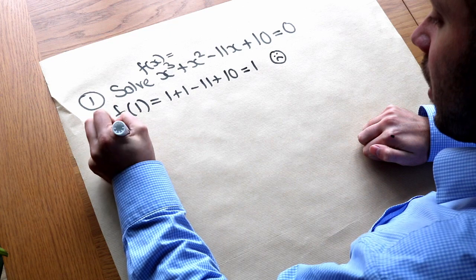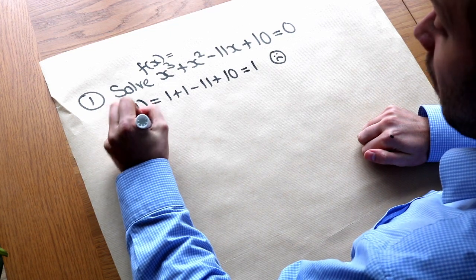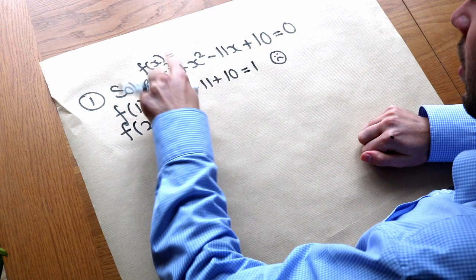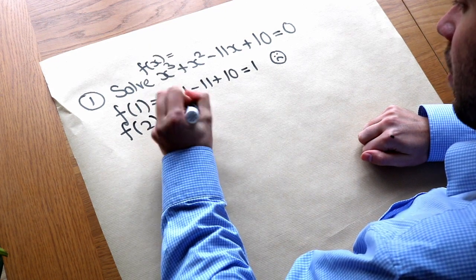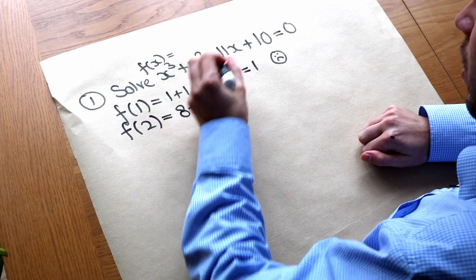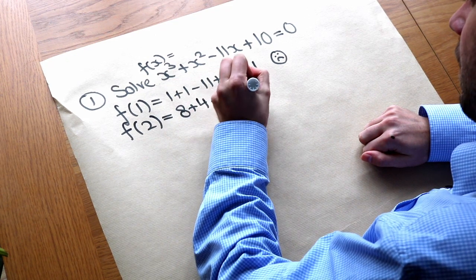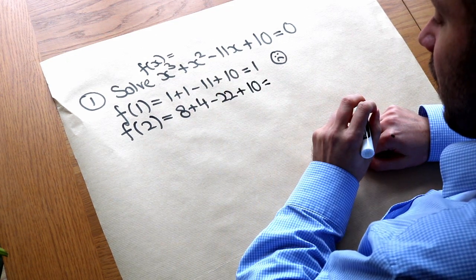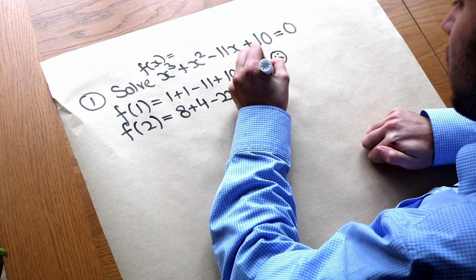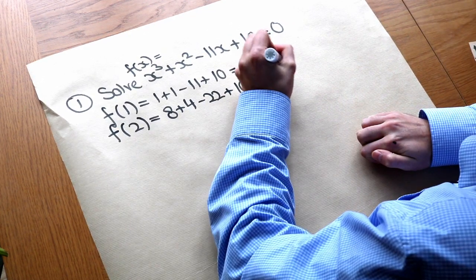What about let's try f of two. We might have tried f of minus one next, but let's just try two. We've got eight plus two squared which is four minus eleven times two which is minus twenty-two plus ten. And then if we do that on our calculator or in our heads we find that actually is zero. So that does work.